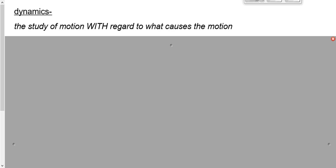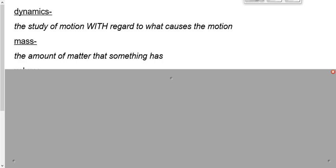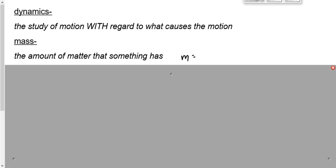We defined a couple of terms over the last couple of days. First one was mass. Do you guys remember what the difference between mass and volume was? Mass is the amount of matter that something possesses. The symbol for mass is going to be an M, and the units for mass would be kilograms.